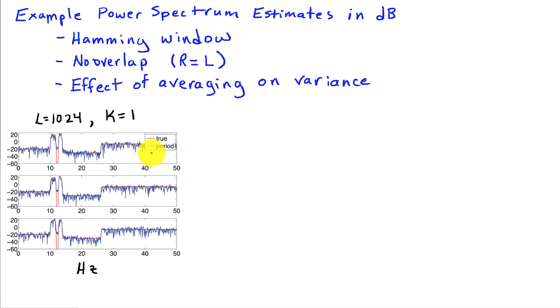So here we have a case where I basically use the periodogram, because I set L equal to 1,024, which is the length of the data segment. So that gives me one value or one spectrum to average. In other words, there's no averaging. And you can see the variance, and it's quite large. It's quite noisy. These are three different random examples that I chose, and each of them has comparable variance.